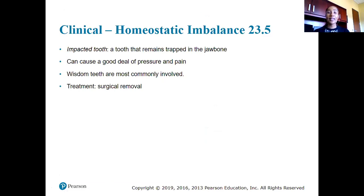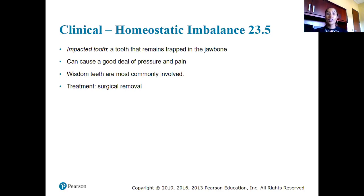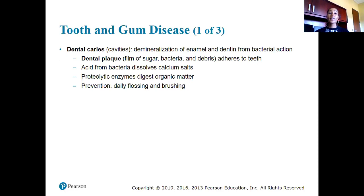Homeostatic imbalances of the teeth: impacted teeth are teeth that did not protrude through the gum and remain trapped in the jawbone — often molars or wisdom teeth. Treatment is surgical removal. Dental caries — the formal term for cavities — occur when there is demineralization of the enamel and dentin caused by bacteria. Dental plaque is a film of sugar, bacteria, and debris that adheres to teeth; acids from bacteria break down calcium salts and proteolytic enzymes digest organic matter, forming dental caries. Prevention involves brushing, flossing, and regular dental visits.